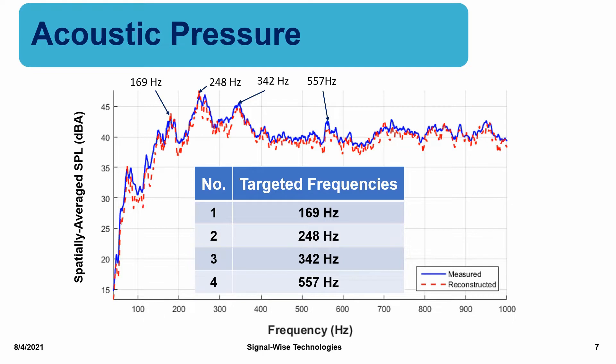The reason we only show the spectrum up to 1000 Hz is that the sound pressure level drops continuously beyond 1000 Hz, which indicates that dishwasher noise is primarily generated by structure-borne sounds. The spectra indicate that there are four major resonance peaks at 169 Hz, 248 Hz, 342 Hz, and 557 Hz. These peaks are selected as targeted frequencies in this example.